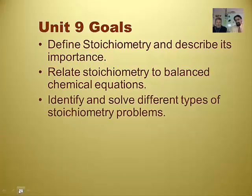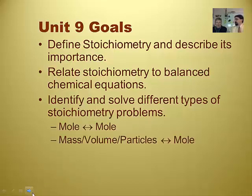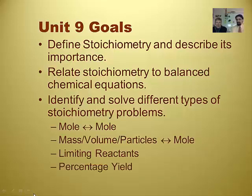We identify and solve different types of stoichiometry problems. These are mole to mole ratio problems. Mass volume particle to mole ratio problems. And we also do something called limiting reactants and percent yield. So those are the different types of stoic problems. And at least percent yield sounds like it's going to be easy. Part over whole times 100. The other two thirds sounds like mole problems on anabolic steroids.